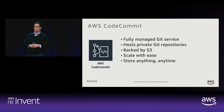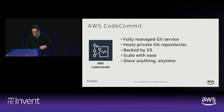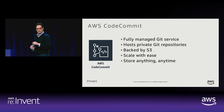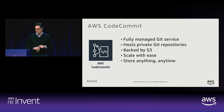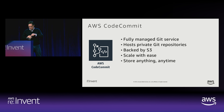CodeCommit is backed by S3. How many nines? Eleven nines — there is nothing more durable than S3. Your code is not going anywhere. We get to inherit all the cool S3 things including the scalability. Whether you have a 50 megabyte code repository or something in the gigabytes, it doesn't matter — you can store anything, anytime. People would try to store other things in their CodeCommit repositories, but you should use it for code.